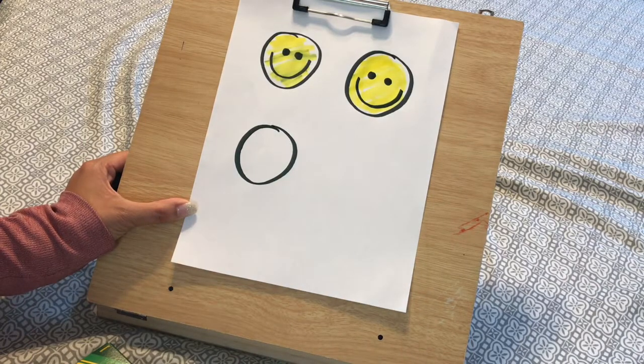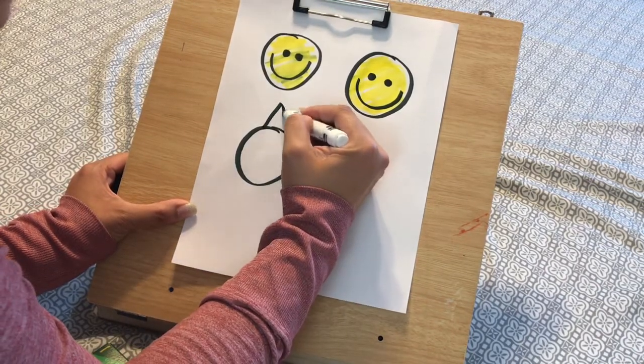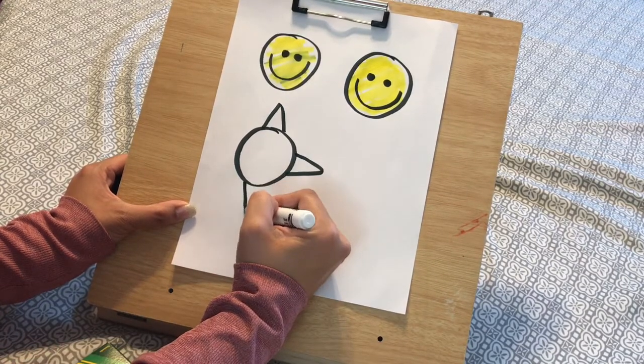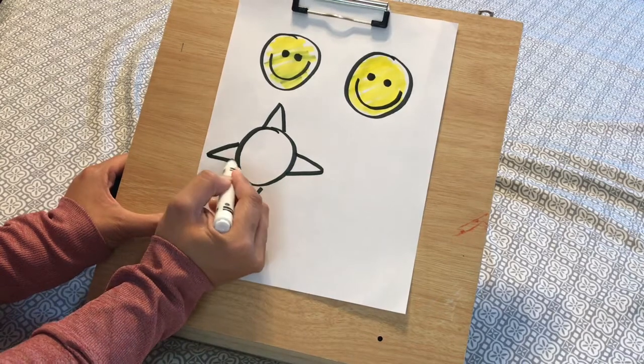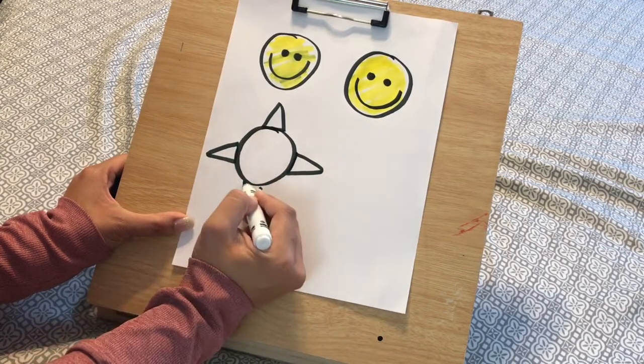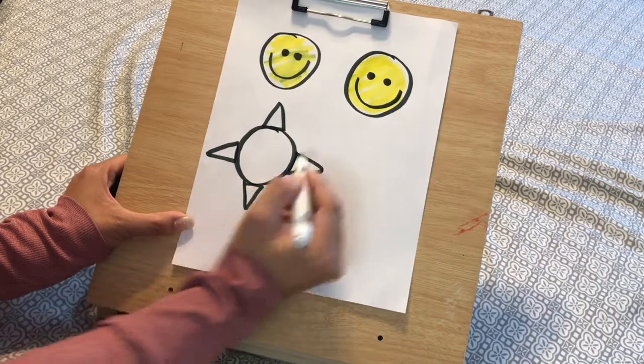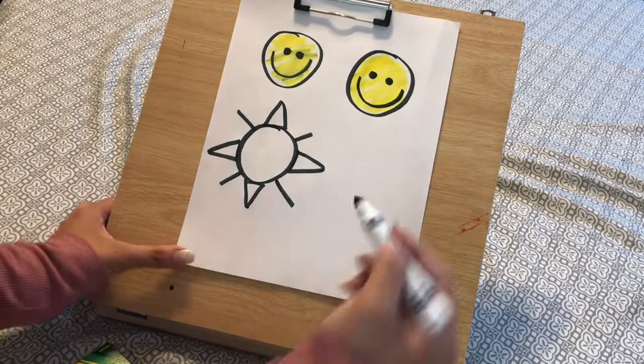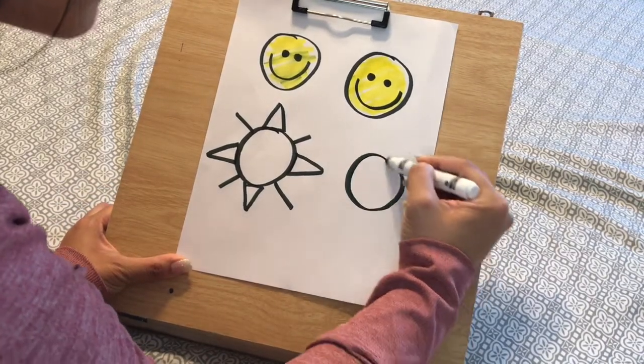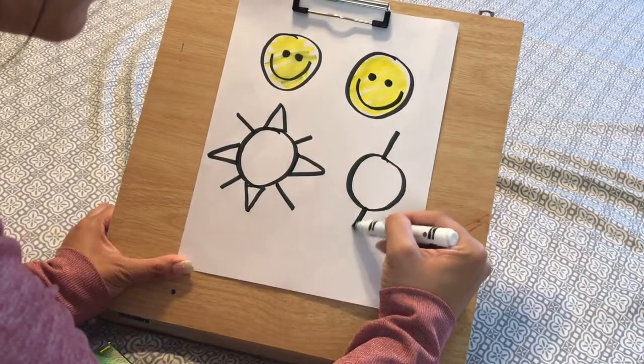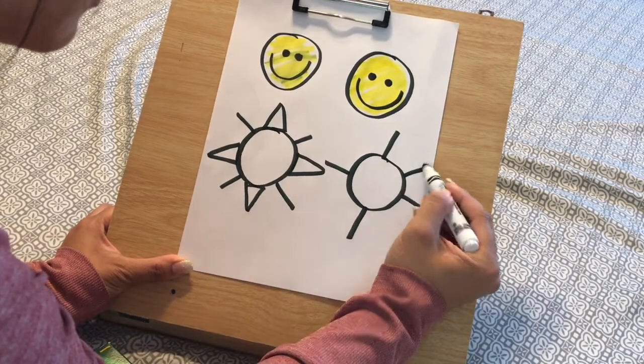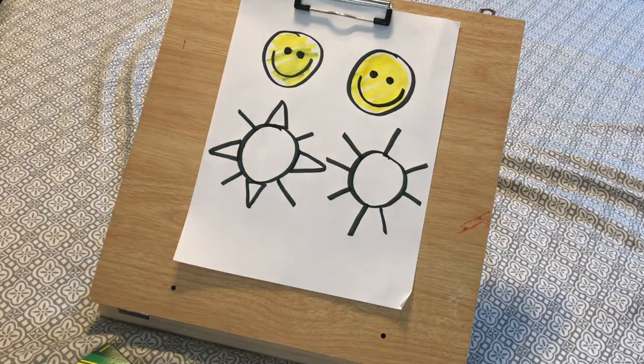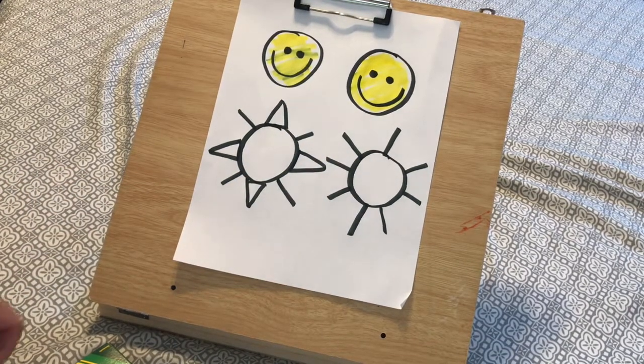We're gonna practice some small triangles. Here's a triangle, one, two... four triangles. I'm just gonna do some lines. That's one way to do a sun. That's another way to do a sun. You can make it different colors.